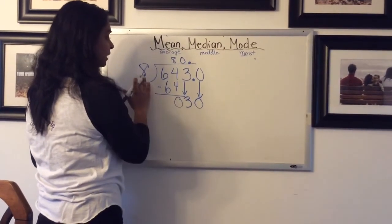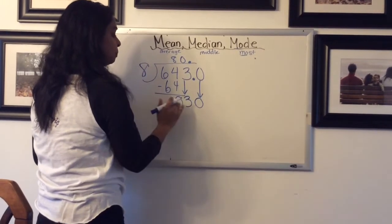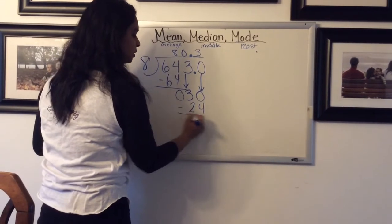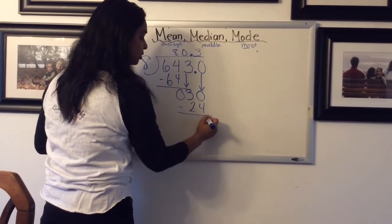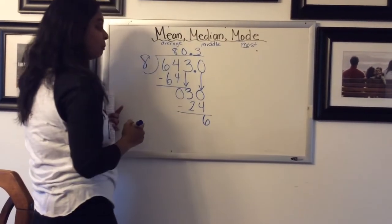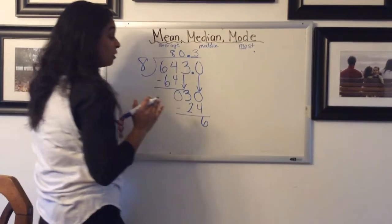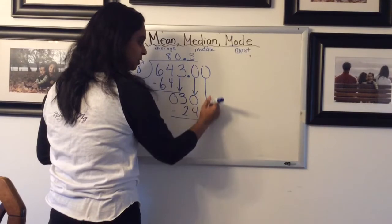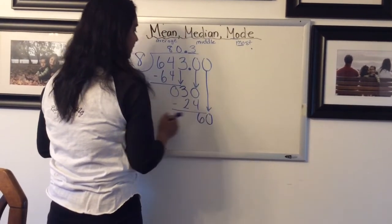Now we're sharing 30 into 8 groups. We know we can go 3 times for 24, do a bit of division, do a bit of subtraction. And now we've got a remainder of 6.